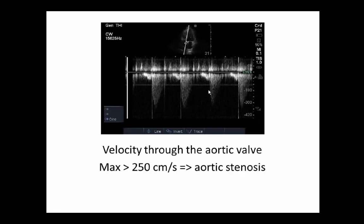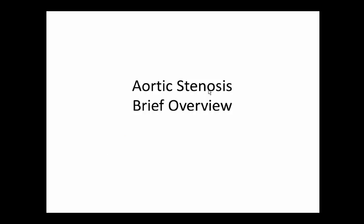If your velocity is greater than roughly 250 centimeters per second, or two and a half meters per second, then that's likely indicative of aortic stenosis. I will talk about the different measurements and how you can figure this out.